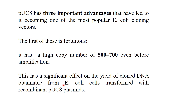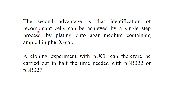This high copy number has a significant effect on the yield of cloned DNA obtained from E. coli cells transformed with recombinant pUC plasmids. The second advantage of pUC8 is that identification of recombinant cells can be achieved by a single-step process, by plating onto medium containing ampicillin plus X-gal. X-gal is a substrate utilized by the lacZ gene product, beta-galactosidase, which produces a blue color, and can be used as a selectable marker.